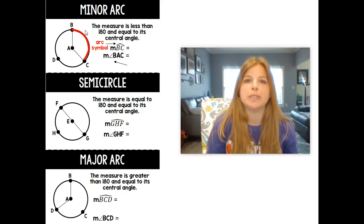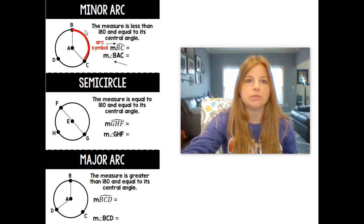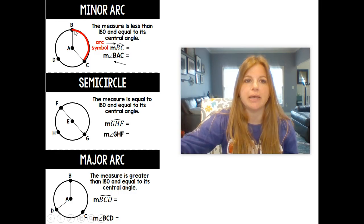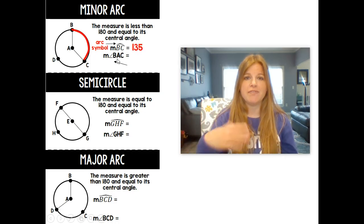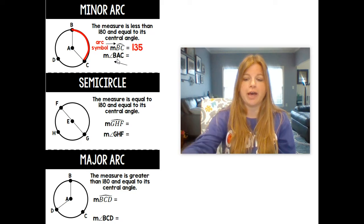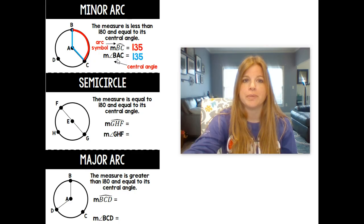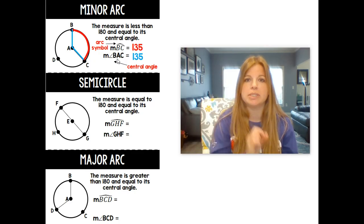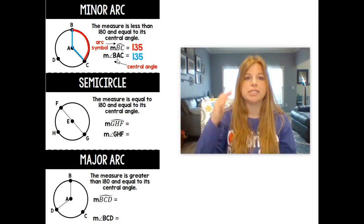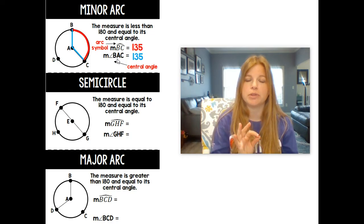It's also equal to its central angle. The central angle is this angle here, angle BAC. So the arc BC is equal to its central angle BAC. So if I said to you the measure of arc BC was 135, then the measure of angle BAC, that angle there, is also 135. An arc is congruent to its central angle. So if I see the arc is 135, then the central angle is 135.